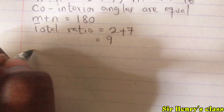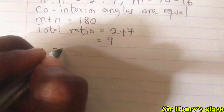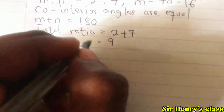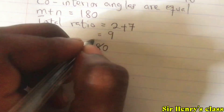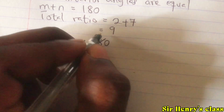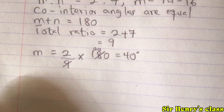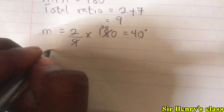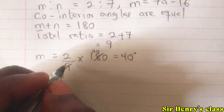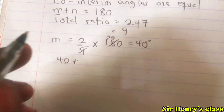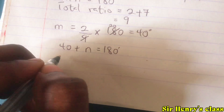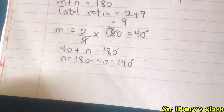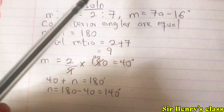To find the value of m, we use the ratio for m: 2 divided by the total ratio 9, times 180 degrees. That gives us 2 times 20, which equals 40 degrees. So the value of m is 40 degrees. To find n, since m plus n equals 180, we have 40 plus n equals 180, so n equals 180 minus 40.